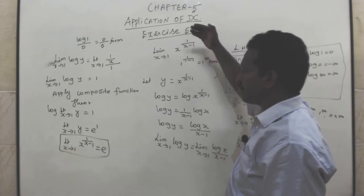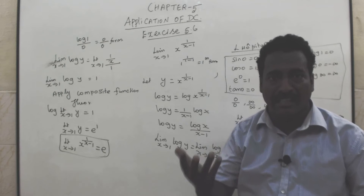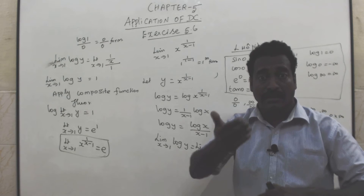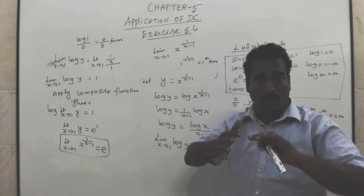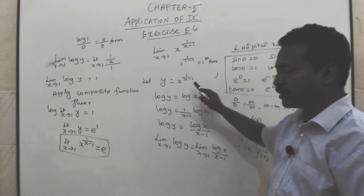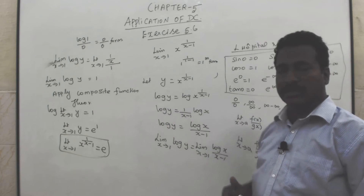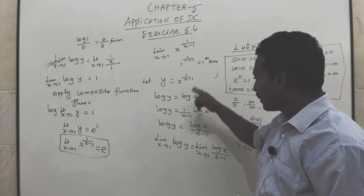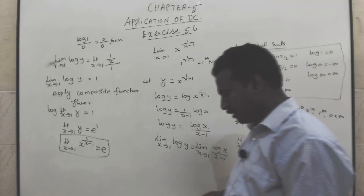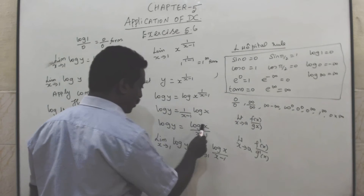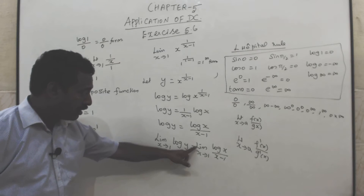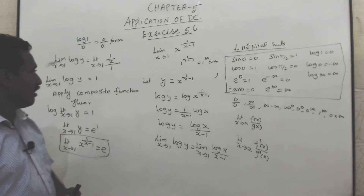Since x power f(x) equals 1 and x power g(x) is in the 1^∞ format, we apply L'Hôpital's rule. In the general format x^g(x) with x equal to 1 and g(x) equal to 1/(x minus 1), we take limit x tends to 1 of log x by x minus 1.